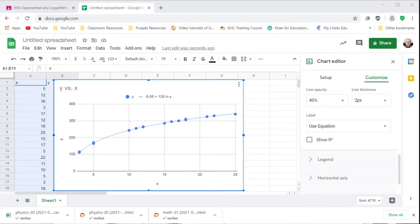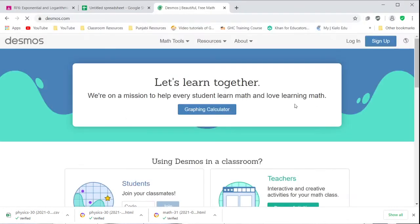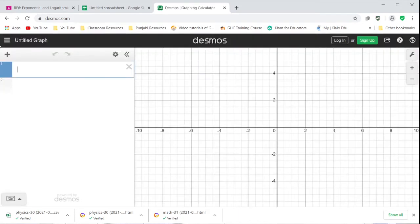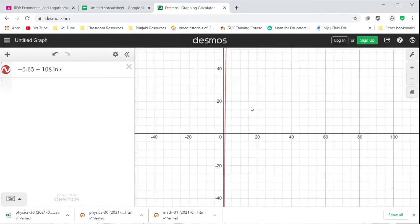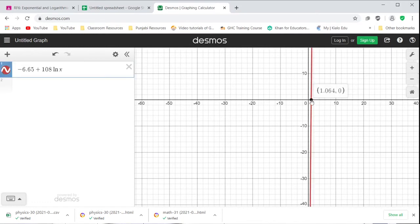So then the location of any intercepts that we have, it doesn't quite show on the graph here. But y equals 0 and 108 log x equals 6.65. So if we were to actually take this same information, once we have our fitted equation, we can graph that fitted equation in Desmos. Negative 6.65 plus 108 times the natural log of x. And yeah, we really need to change the zoom to see everything. But we do have a y-intercept of about 1.064.